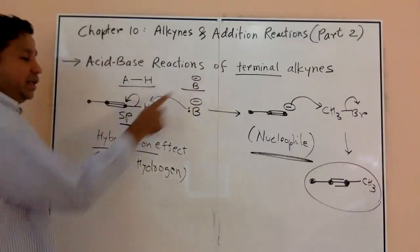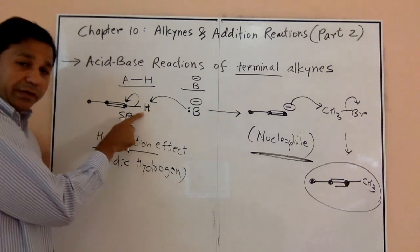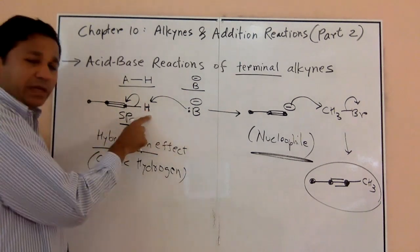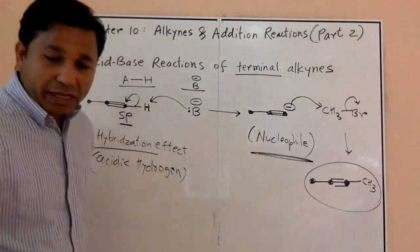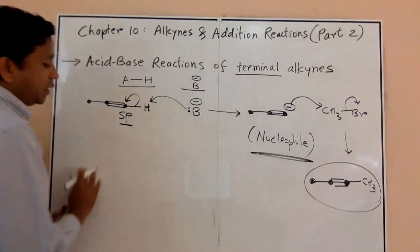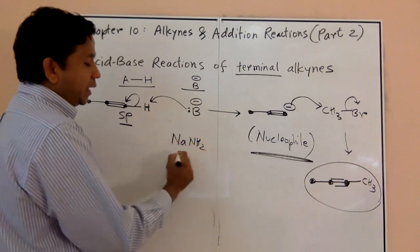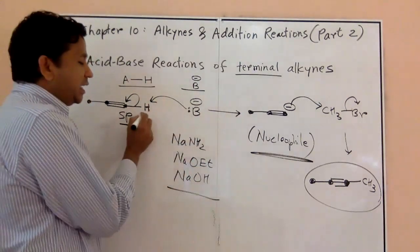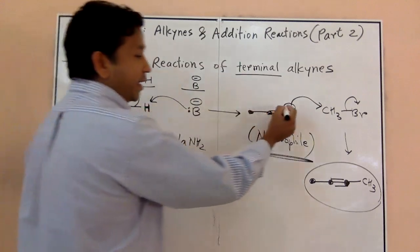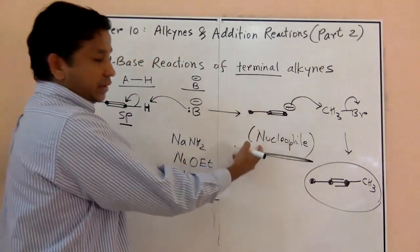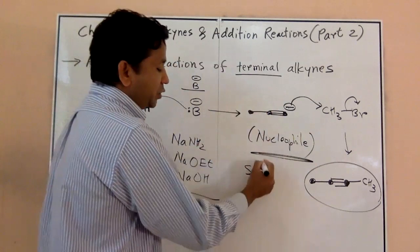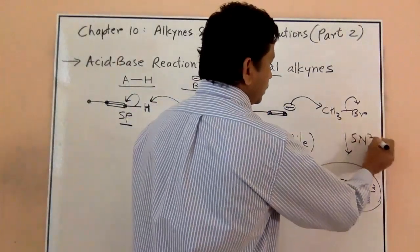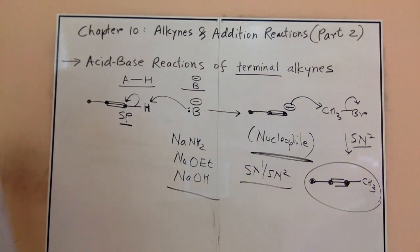The significance of a terminal alkyne is that we have a hydrogen on that terminal carbon, and that hydrogen is acidic. If I throw a base, the base will pick up that hydrogen. However, you cannot use just any base — it has to be a strong base: NaNH2, NaOEt, or NaOH. A strong base picks up the hydrogen, leaving a negative charge on the carbon, making it a nucleophile. As a nucleophile, it will go SN1 or SN2 depending on the substrate — for a primary substrate, it will be SN2.